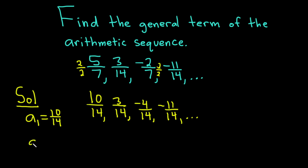And the common difference is d. This is the number you add to get from one term to the next. We can see here right away that to get from 10 over 14 to 3 over 14, we're adding negative 7 over 14. Likewise, to get from 3 over 14 to negative 4 over 14, we're adding negative 7 over 14.